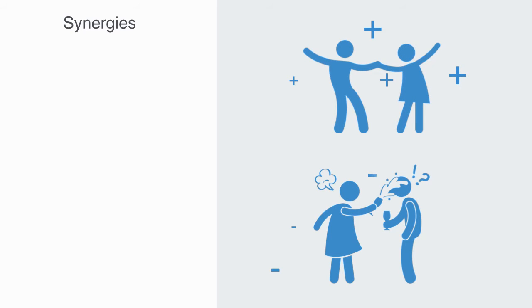If the interaction between the two components adds value to the whole, this is called a synergy. If the interaction subtracts value from the whole, it is called interference.